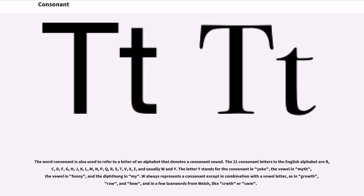The word consonant is also used to refer to a letter of an alphabet that denotes a consonant sound. The 21 consonant letters in the English alphabet are B, C, D, F, G, H, J, K, L, M, N, P, Q, R, S, T, V, X, Z, and usually W and Y.